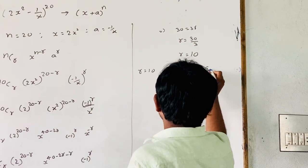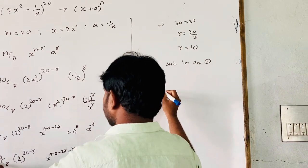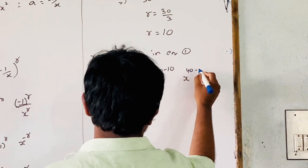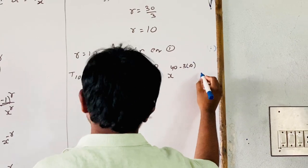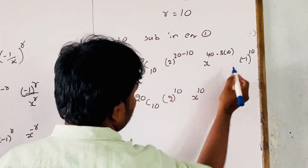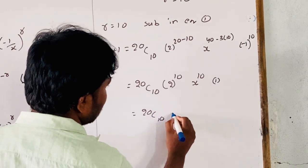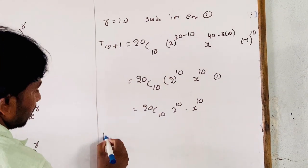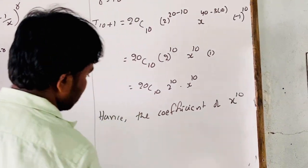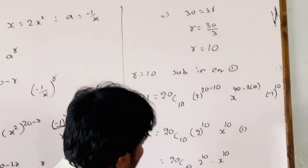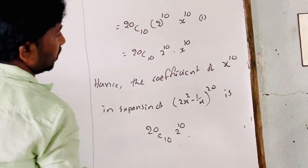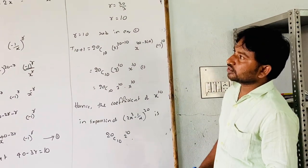Now substituting r = 10: T(10+1) = 20C10 times 2^(20-10) times x^(40-30) times (−1)^10. That equals 20C10 times 2¹⁰ times x¹⁰. Hence, the coefficient of x¹⁰ in the expansion of (2x² − 1/x)²⁰ is 20C10 times 2¹⁰. Thank you for watching my videos.